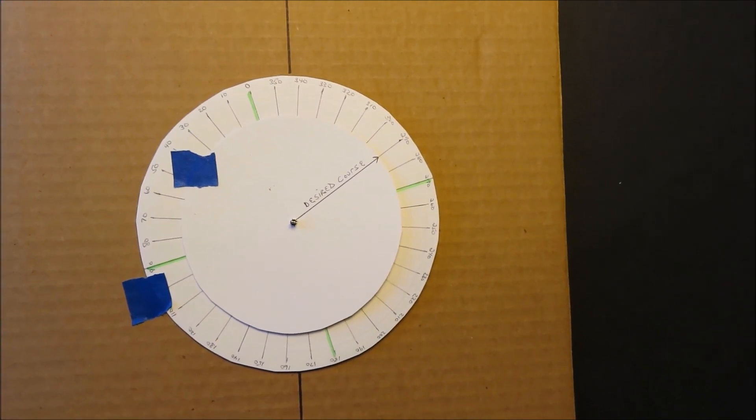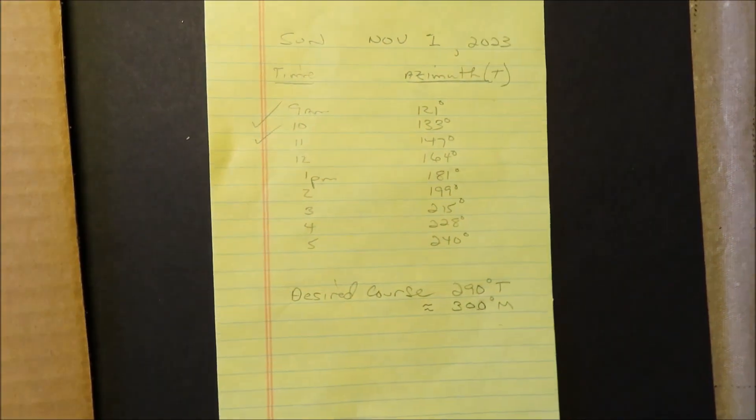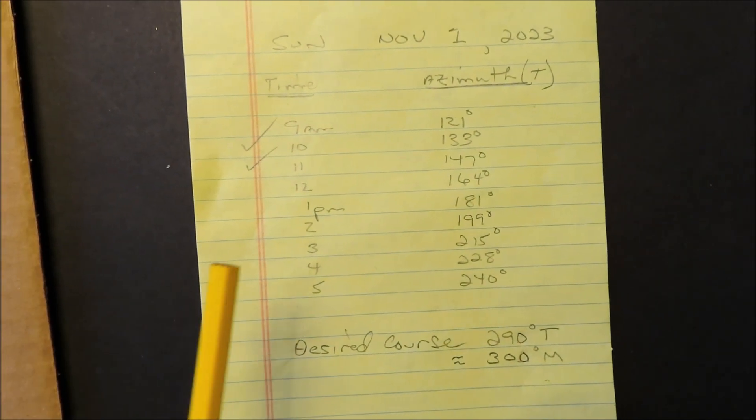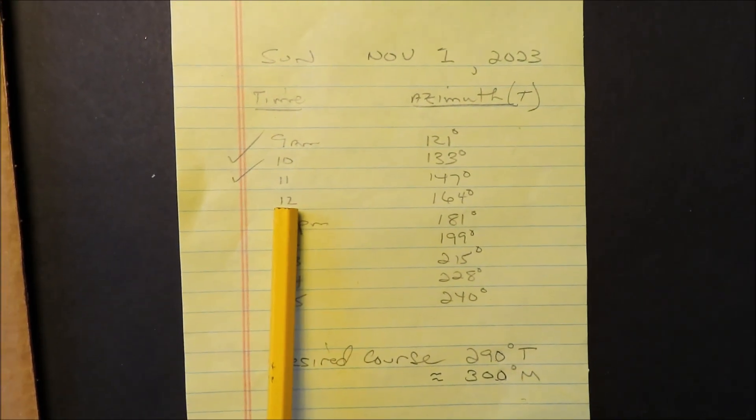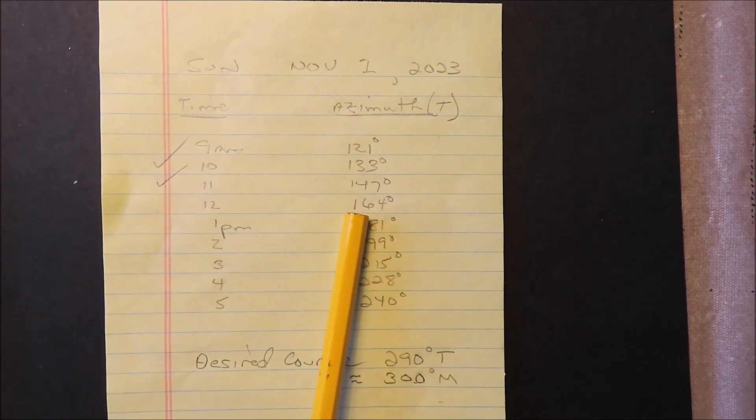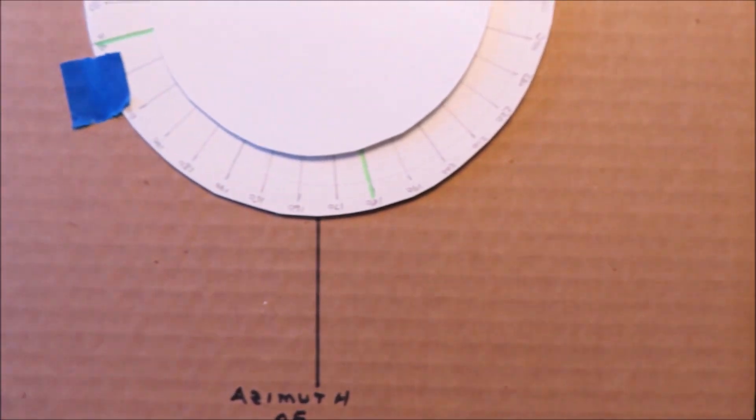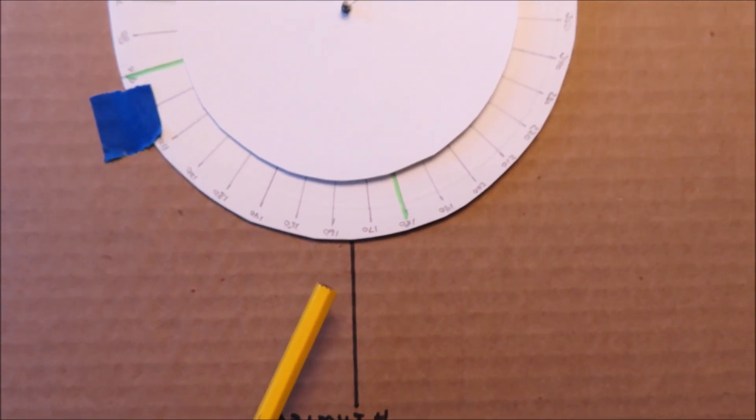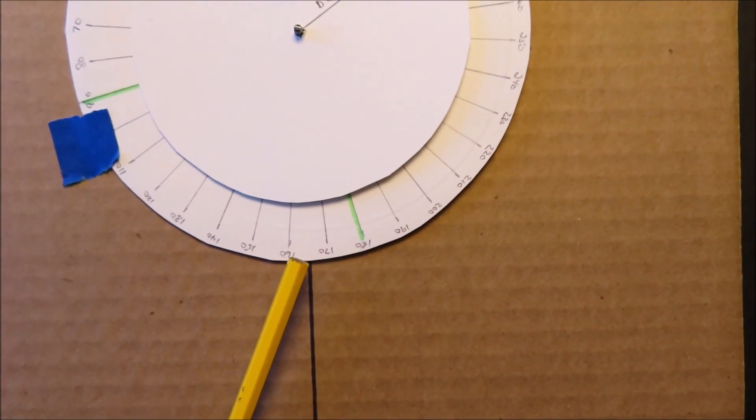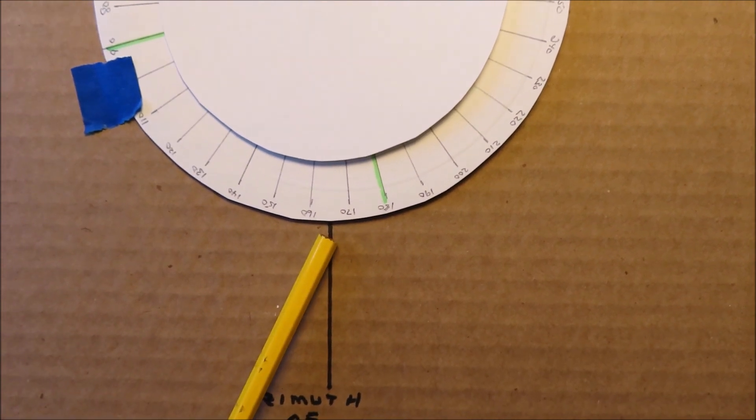So I'm going to show you an example. Hold on, let me grab this other piece of paper. At noon, I am going to dial in the azimuth of the sun, which is 164 degrees here today at noon. If you look over here, you'll see that I've got 164. Here's 160. Here's 170. I have 164 dialed in.